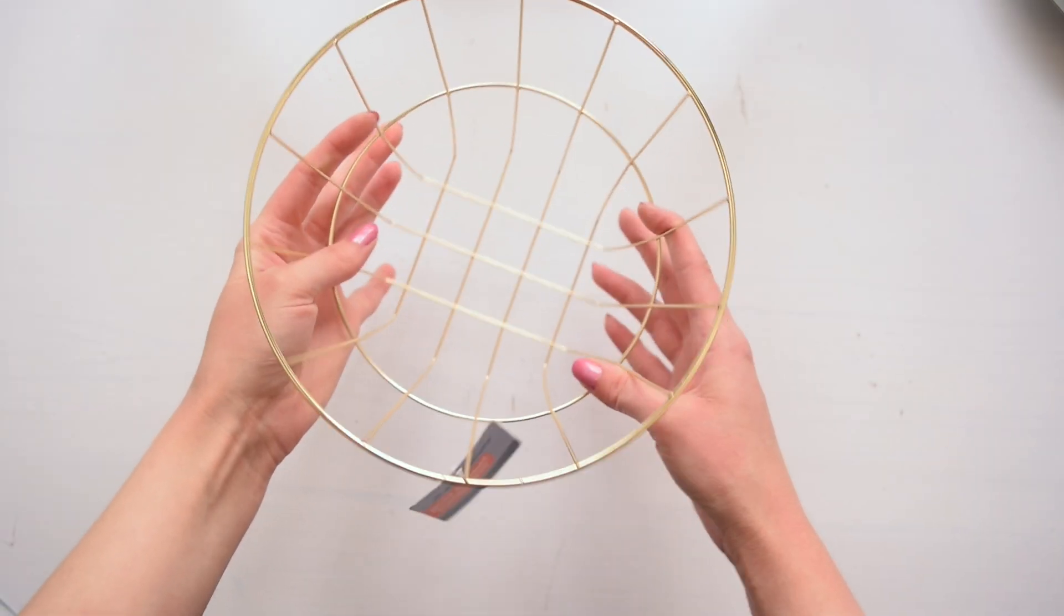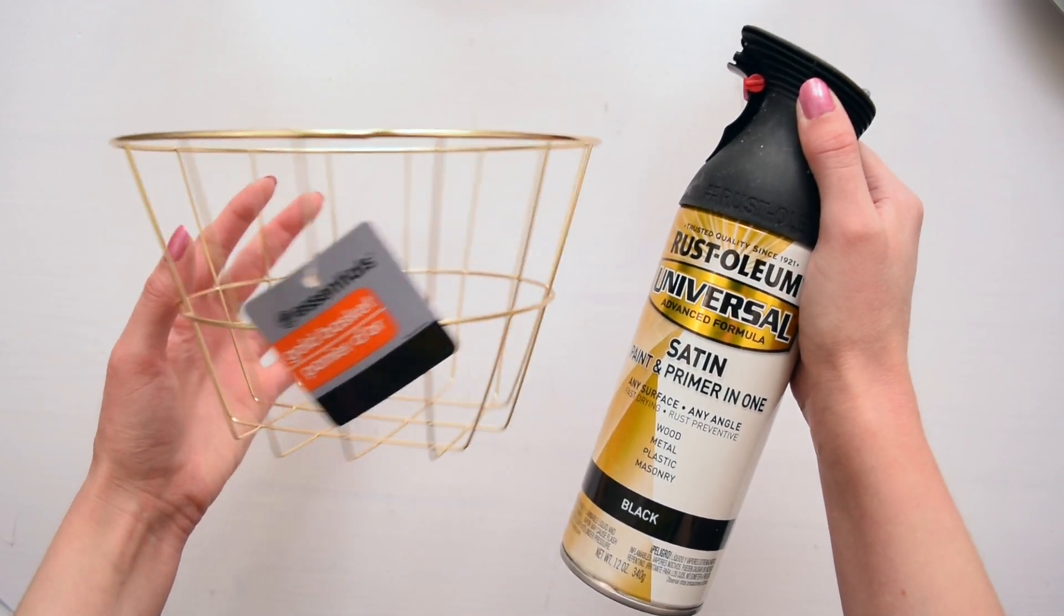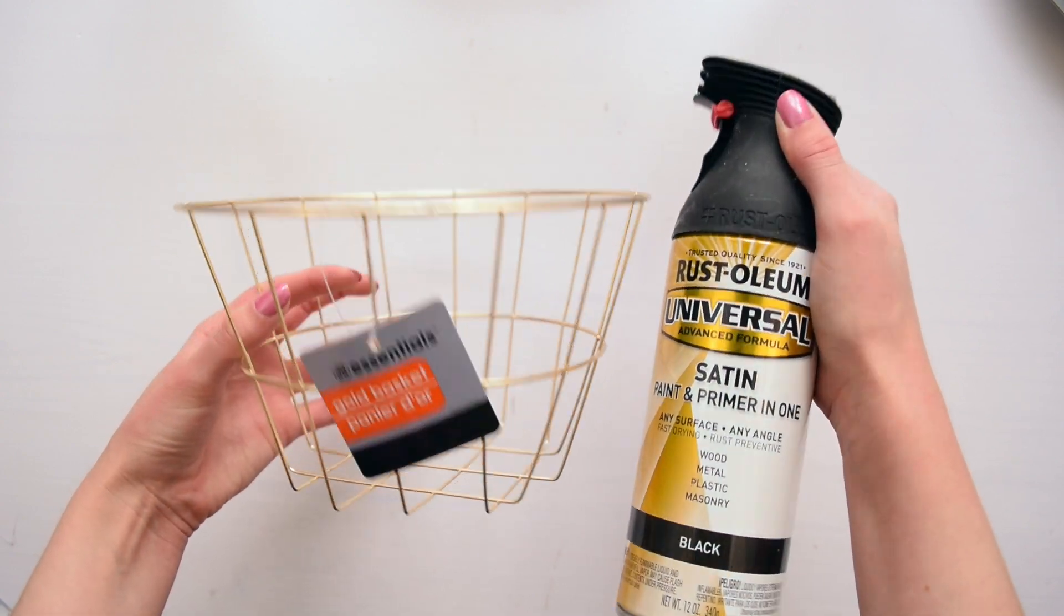For this third project I'm using one of these Dollar Tree metal wire baskets and I decided to spray paint it black just to minimize the shininess of the gold but you could skip this step.